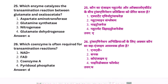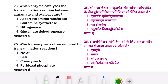Which enzyme catalyzes the transamination reaction between glutamate and oxaloacetic acid? The right answer is aspartate aminotransferase. Which co-enzyme is often required for transamination reactions? Pyridoxal phosphate is the right answer.